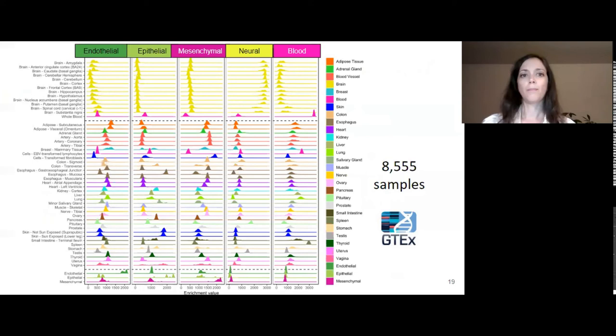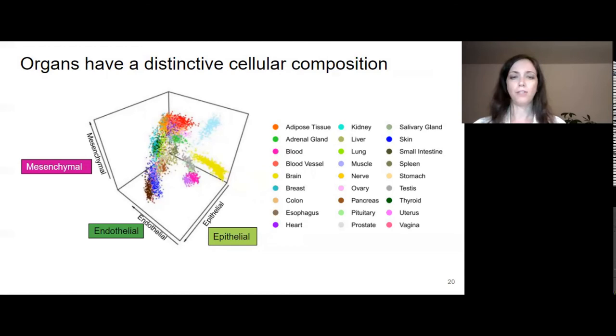Here, you can see a summary of the results. The main observation that we can make at first glance is that the enrichment scores are different across different tissue sites. More to that point, if we plot the samples based on the three dimensions identified by the enrichment scores for mesenchymal, endothelial, and epithelial, we can see the samples form distinct groups, which shows that each organ has its own distinctive cellular composition and this is reflected at the transcriptional level.